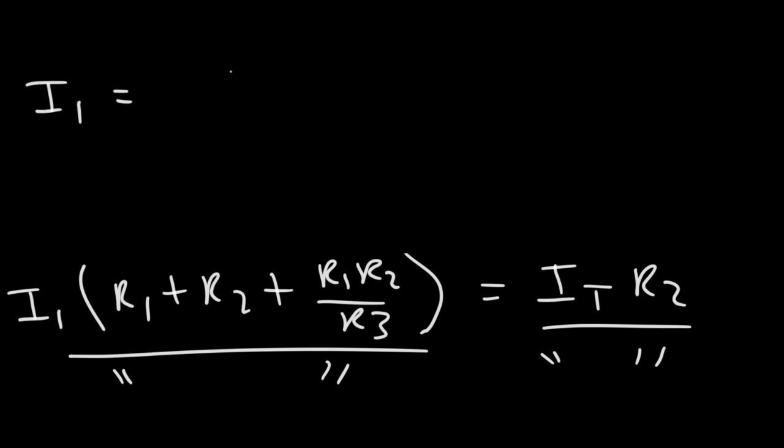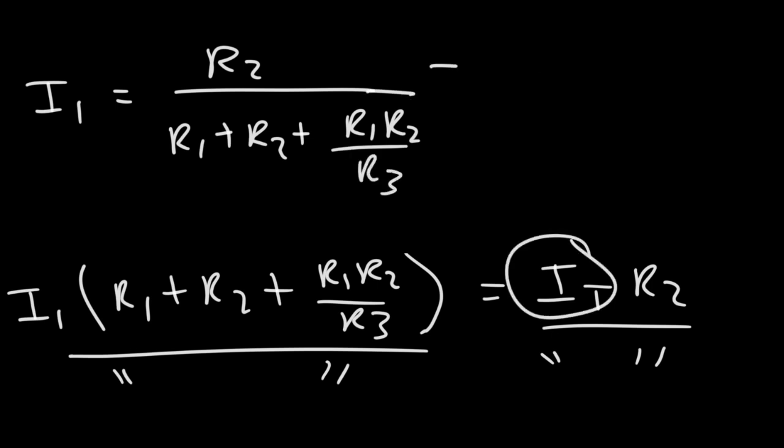So now we have this equation, R2 divided by everything we see here, R1 plus R2 plus R1 R2 over R3, and then times this current, the total current.